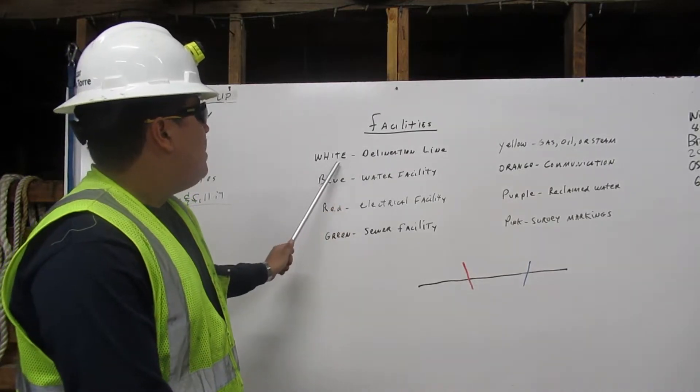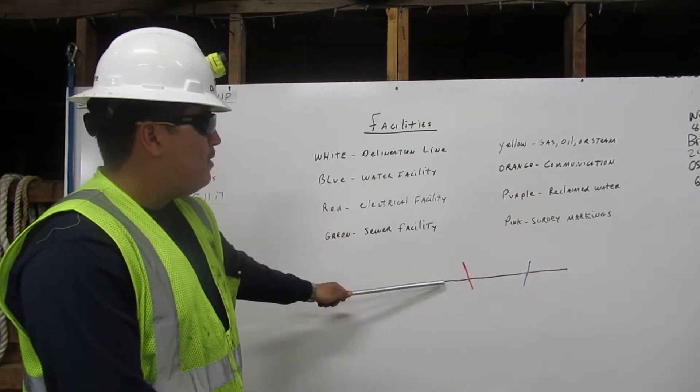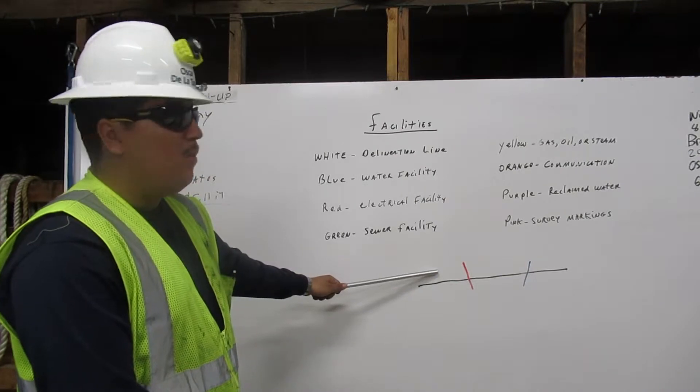Facilities. White represents our delegation line. In our figure below, it is in black because it is on a whiteboard.